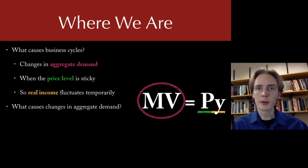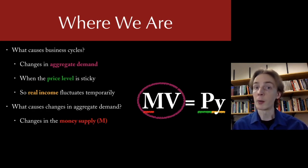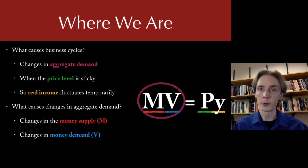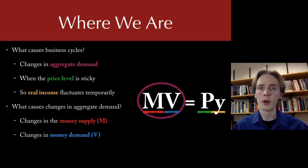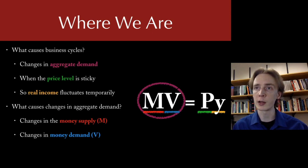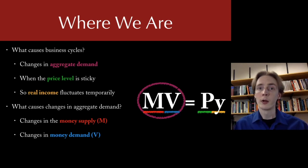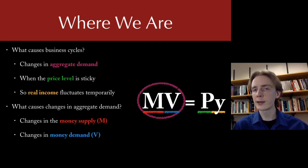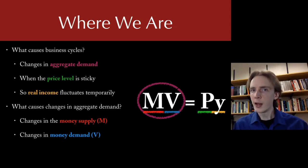So what we're going to ask today is why aggregate demand changes in the first place. There are two basic ways this can happen: either the money supply can change, or money demand can change — which is to say velocity changes. These are exhaustive; there's no other way the volume of spending can change. The price level never changes on its own — that's always in response to something else. If real income changes and neither M nor V changes, that's going to affect the price level equally and oppositely, so the product of P and Y stays the same.